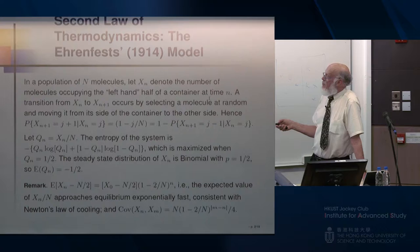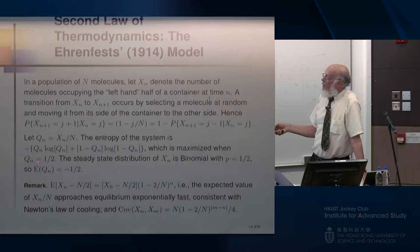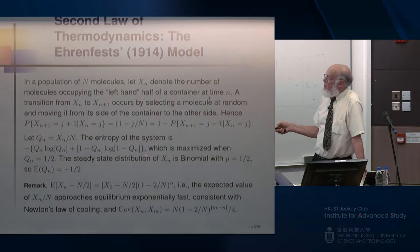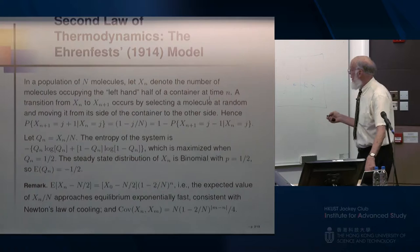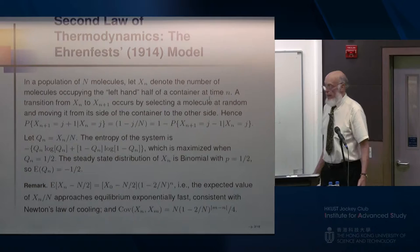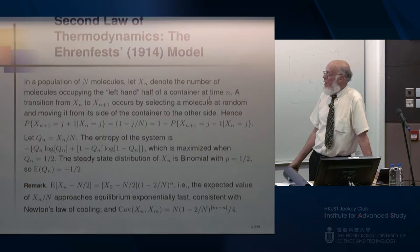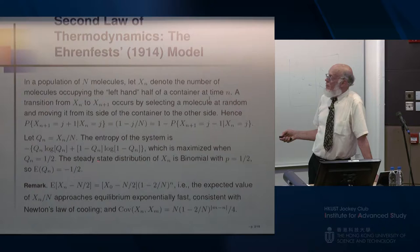The formal definition of the entropy of this system involves Qn, the proportion of molecules on the left-hand side, which is maximized when Qn equals one half. The steady-state distribution is binomial with probability P equals one half, and so it leads on average to maximum entropy. But of course you can start with a 50-50 distribution and eventually molecules will move to one side, representing a decrease in entropy.